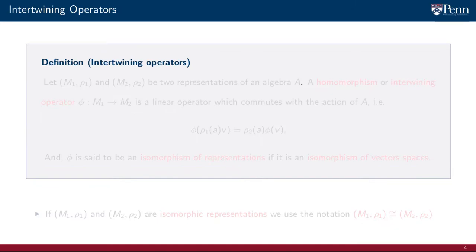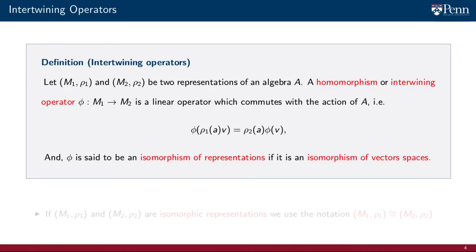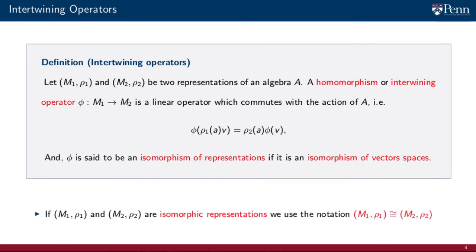Now we introduce the notion of homomorphism or intertwining operator between representations, which will allow us to state comparisons between them. Let M sub 1, Rho sub 1 and M sub 2, Rho sub 2 be two representations of the same algebra A. A homomorphism or intertwining operator phi acting from M1 to M2 is a linear operator that commutes with the action of the algebra. That is, phi of Rho1 of A on v equals Rho2 of A on phi of v. Additionally, we refer to phi as an isomorphism of representations if phi is in addition an isomorphism of vector spaces. We indicate that two representations are isomorphic using the congruence symbol.